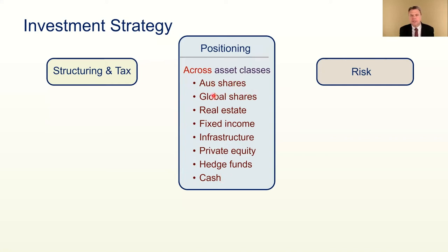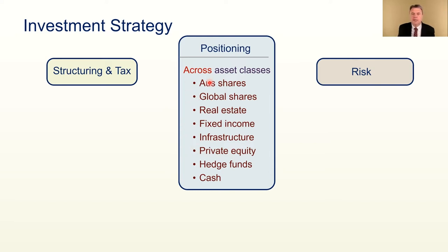The asset classes include: Australian shares, global shares, real estate — which includes residential real estate like apartments and houses, as well as commercial real estate like shopping centres, office towers, and industrial parks — fixed income, which means bonds, infrastructure, which means all of the shared productive assets of the economy like roads, airports, cloud computing centres, and electricity networks. That's a fantastic asset class in these times of returning inflation. And then private equity — the ownership of shares outside of the public markets. Australian shares are listed on the ASX, global shares on exchanges like the NYSE, London, Frankfurt, Shenzhen, Mumbai, and Tokyo. Private equity is not listed on stock exchanges — that's a fantastic asset class as well. Every investor also needs some liquidity, some cash.